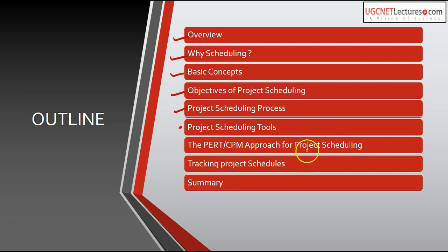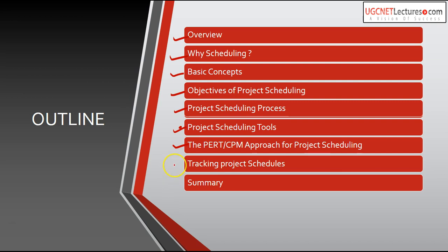We will also see the PERT and CPM approach for Project Scheduling. The critical path method is asked most often in exams, so we will see this in detail. Then we will see how we can track Project Schedules — in Project Management we want to track the progress of the project: how much we have completed, what the deadline is, and whether we are meeting the deadline. We'll also see how to catch up with the deadline and how to plan activities so we don't go beyond the deadline.